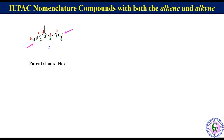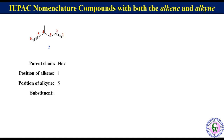In this case, the numbering which gives a lower number to the alkene will be the correct numbering, as alkene comes before alkyne in alphabetical order. So right to left numbering will be correct. Position of alkene is 1 and position of alkyne is 5. There is a methyl group at C4, so it will be written as 4-methyl. Thus the IUPAC name is 4-methyl-hex-1-ene-5-yne.